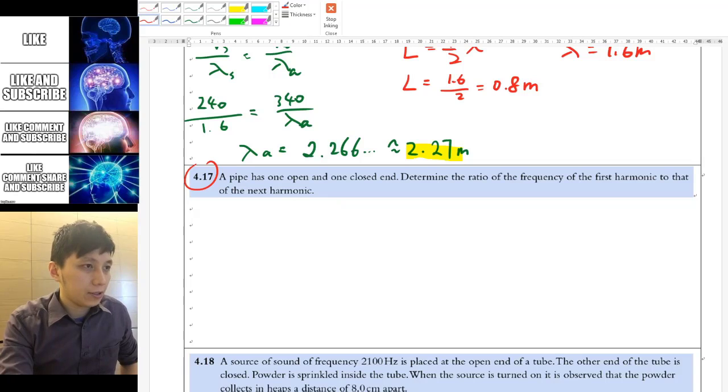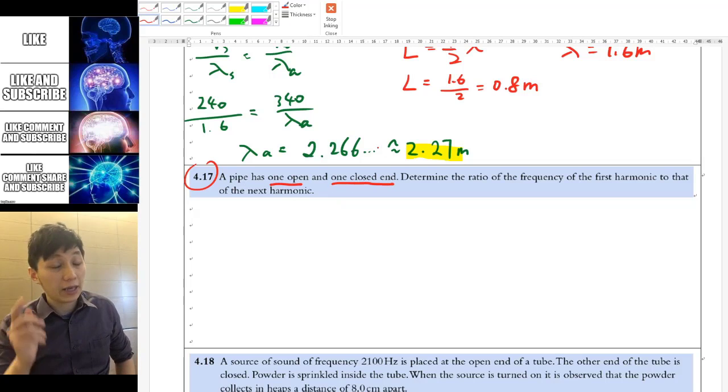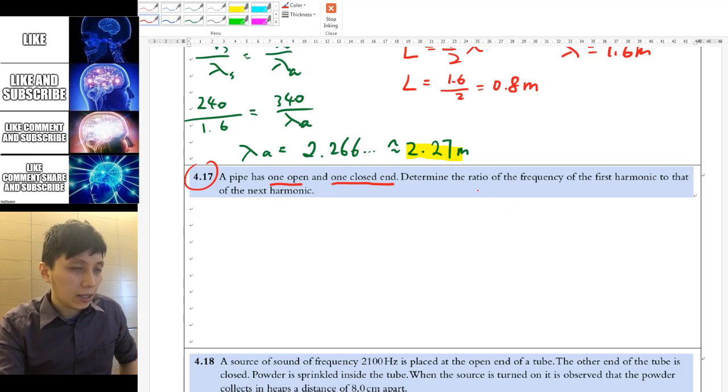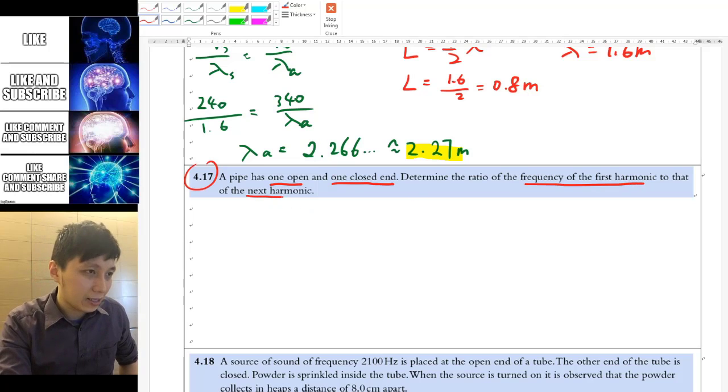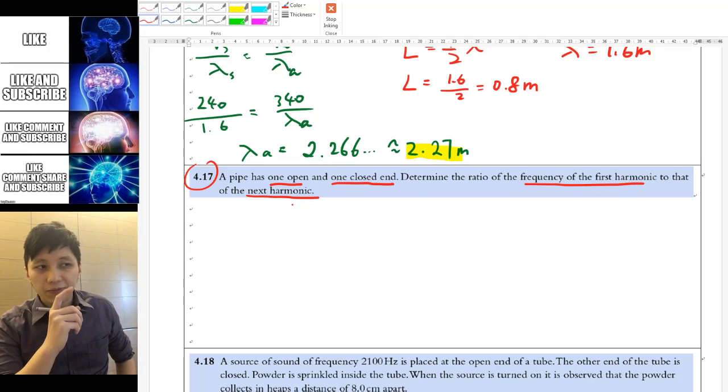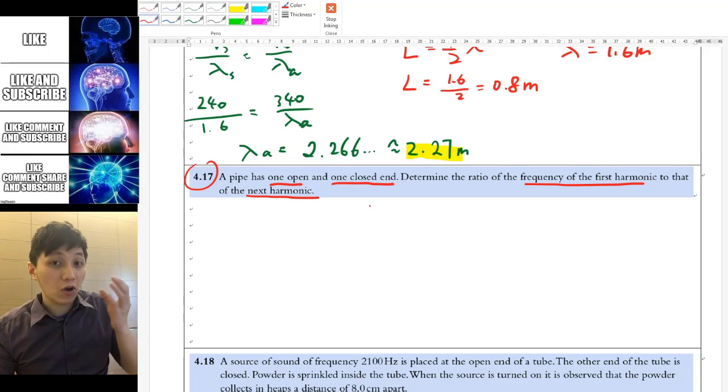Next question. It said there is a pipe with one open and one closed end. So that's case number three, if you can refer back to your booklet. And it asks you to determine the ratio of frequency of the first harmonic to the next harmonic. So what next harmonic means actually here is if you recall, this is a case where you only have the odd number of harmonics.